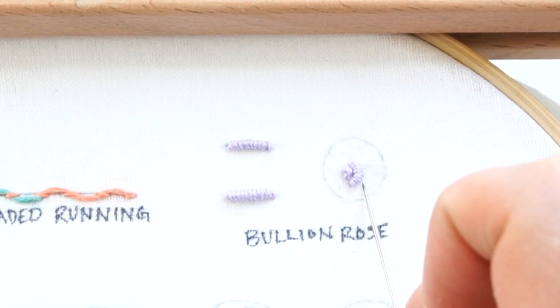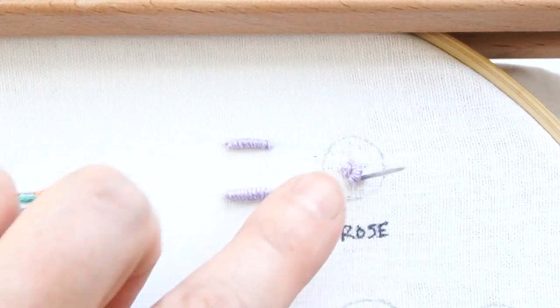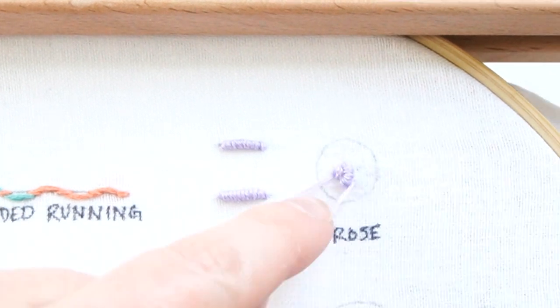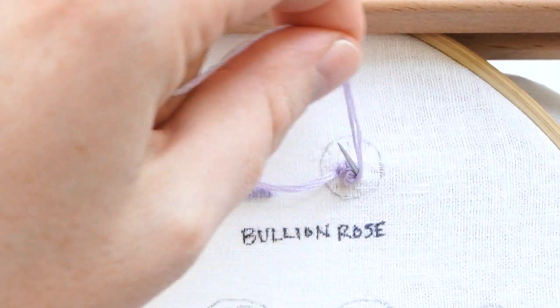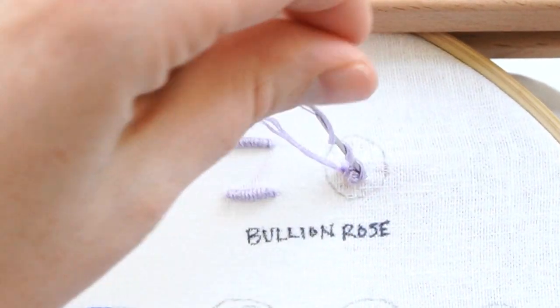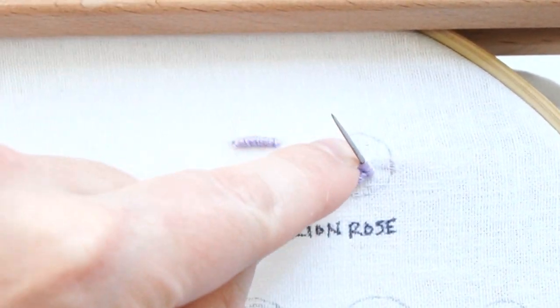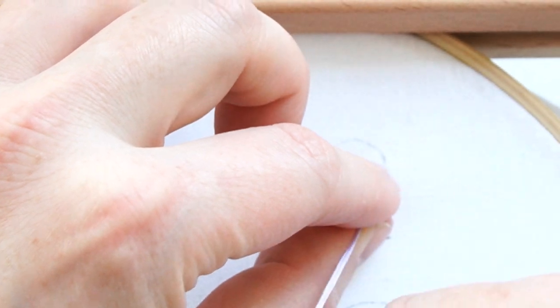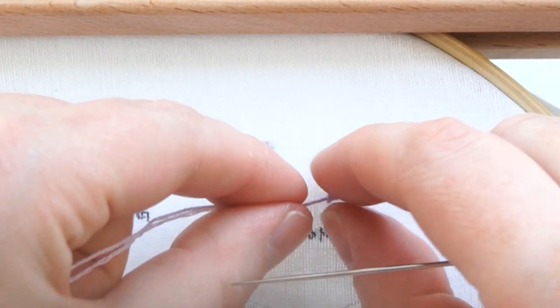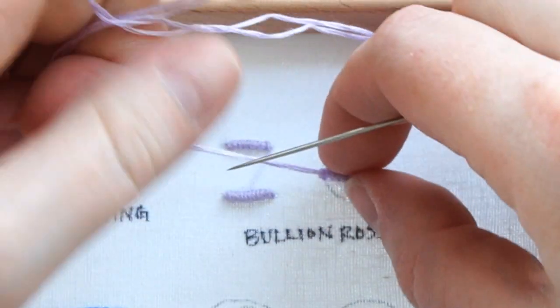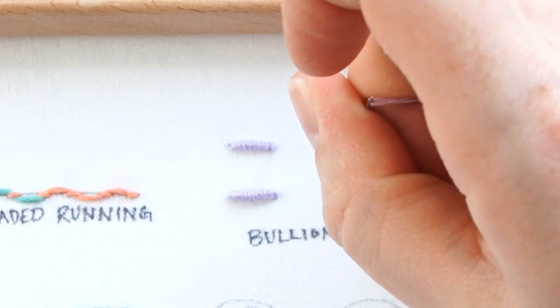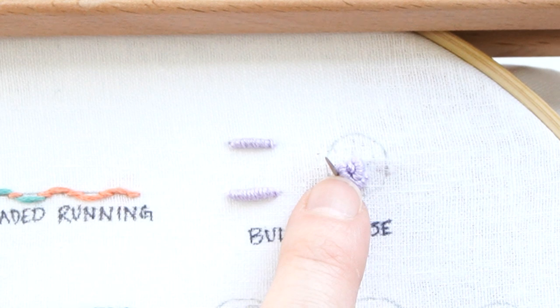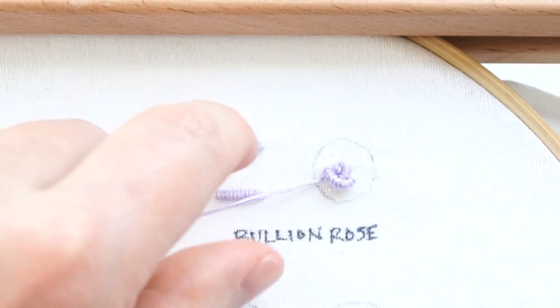Bring it down to the left of the French knot, then bring it up in your original point. Wrap the thread around, hold the wrappings, and pull the needle through. Since this knot is going up, pull it slightly in that direction, then bring the needle down at the end.